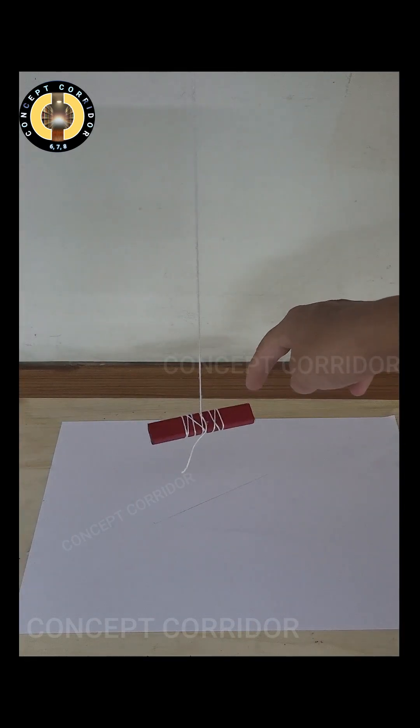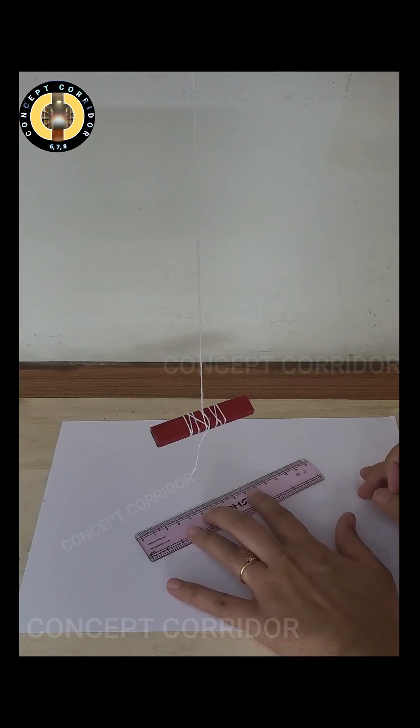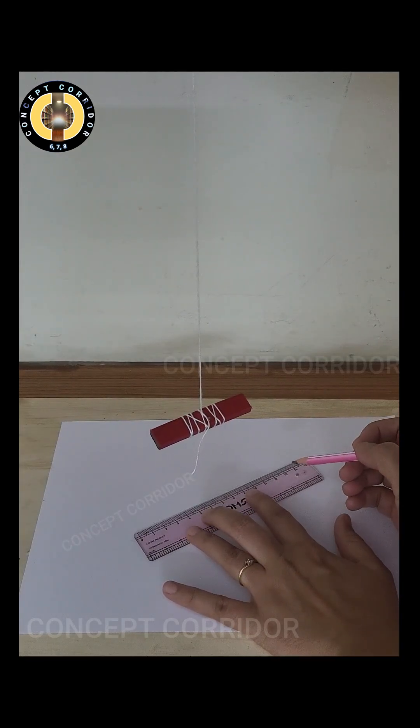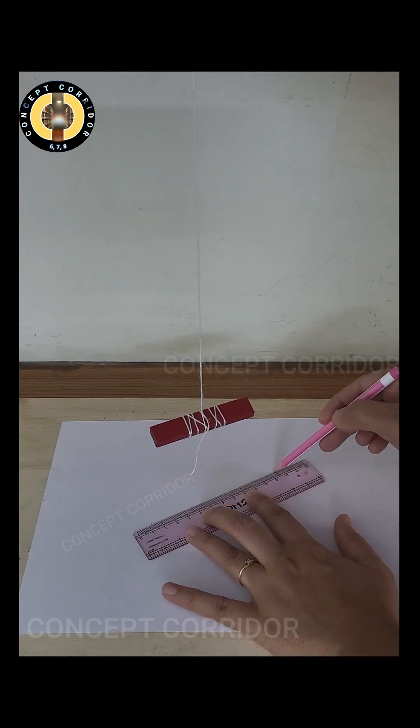Now we will again give a gentle push, magnet is rotating, we will wait for it to come at rest. Magnet is at rest now, again bring the scale and try to draw a parallel line toward this bar magnet.